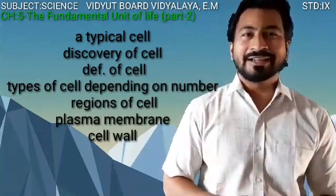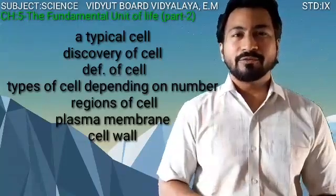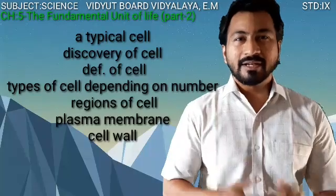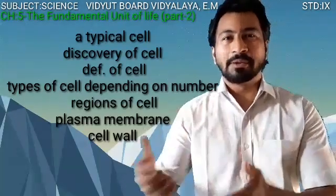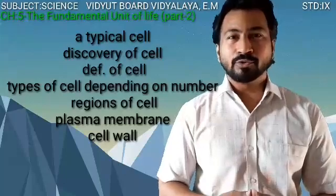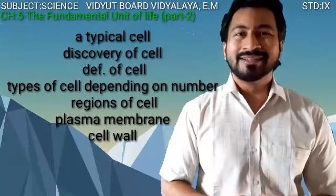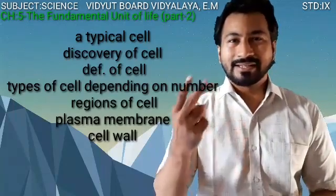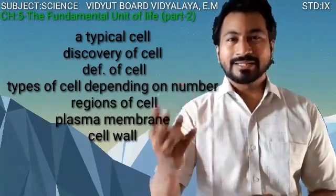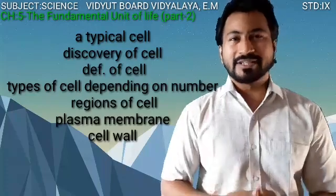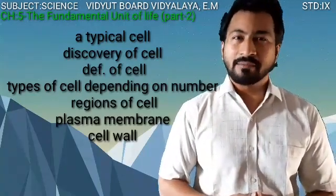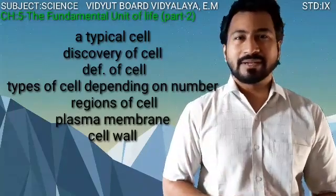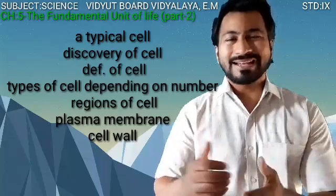Later on we went into the types of cells — depending on the number, we have done unicellular and multicellular. Then we went on to the three major regions of a cell: the plasma membrane, the nucleus, and the cytoplasm. We discussed the plasma membrane and its covering, specifically in the case of plant cells.